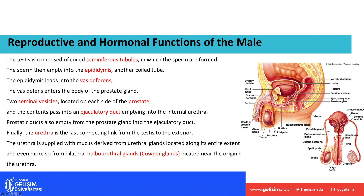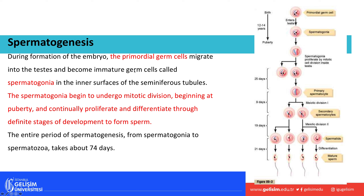During formation of the embryo, primordial germ cells migrate into the testis and become immature germ cells called spermatogonia. The spermatogonia line the inner surface of the seminiferous tubules. At puberty — anywhere between ages 9 and 15 — they begin to undergo mitotic division, and this continues throughout the person's life, even after death.